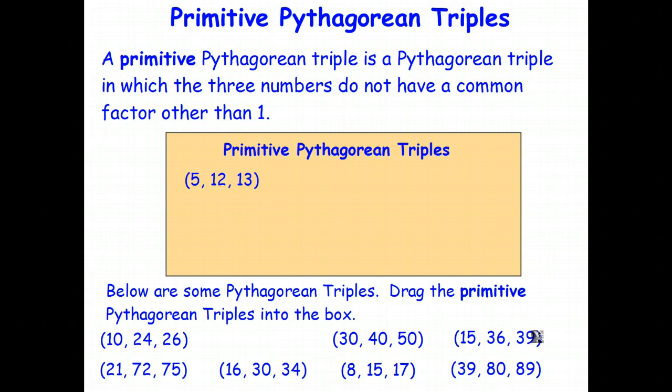15, 36, 39. Well, 3 divides into each of those, so that's not a Pythagorean triple. 21, 72, 75. Let's have a think about that. I think 3 goes into each of those numbers. Yep, so that's not a Pythagorean triple.